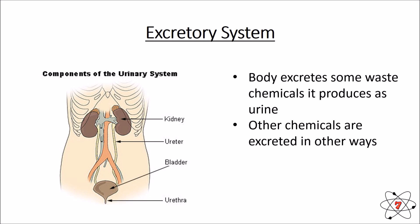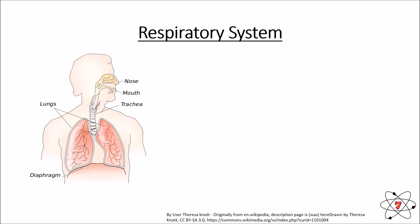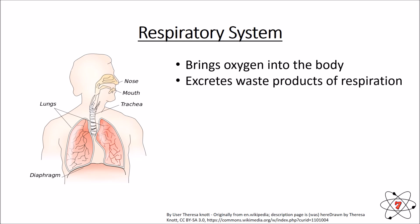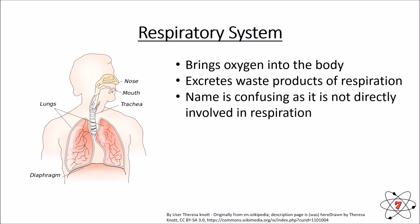The respiratory system is vital — it brings oxygen into our body. We breathe in through our lungs and excrete the waste products of respiration, getting rid of carbon dioxide. One important point: although the respiratory system helps respiration by bringing oxygen into the body, it is not directly involved in respiration. Respiration happens in every cell in your body and provides energy — it does not specifically happen in the respiratory system.